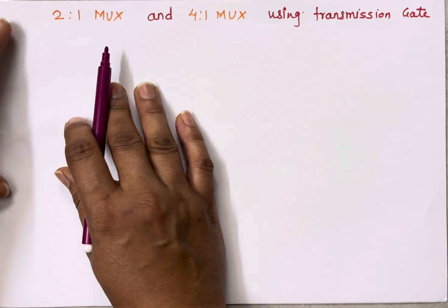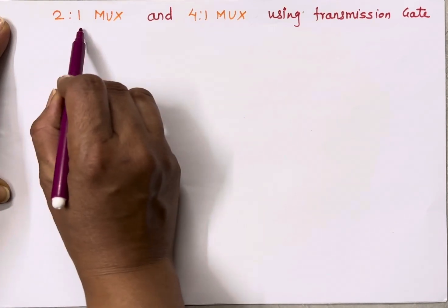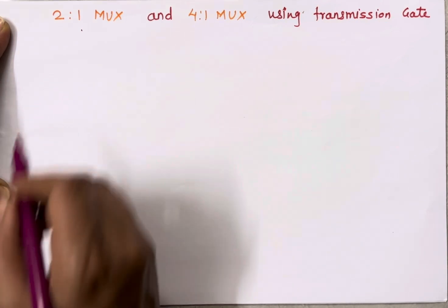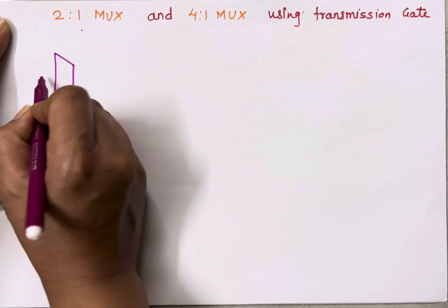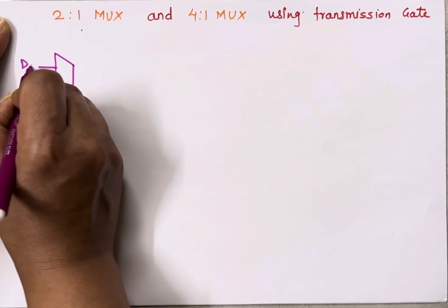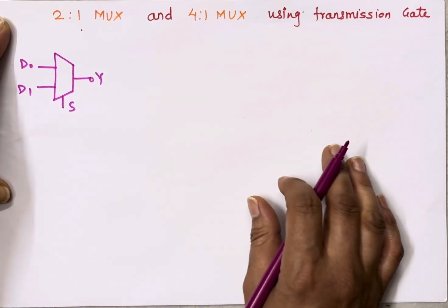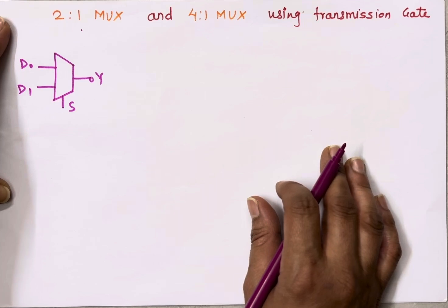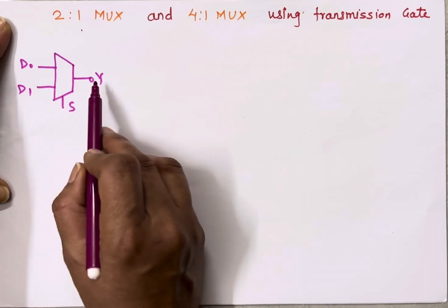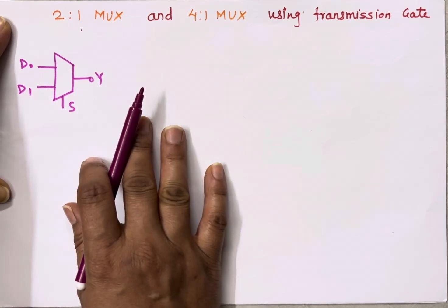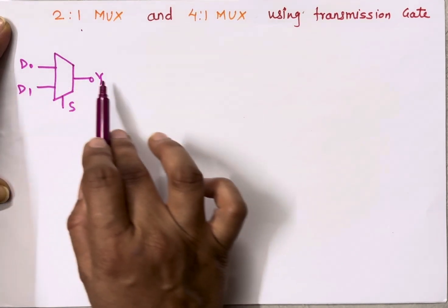Let's start with the 2-to-1 multiplexer. A 2-to-1 multiplexer has 2 inputs and 1 output. The symbol has 2 inputs D0 and D1, output Y, and 1 select input. The job of the select input is to choose a particular input out of D0 and D1 and pass that value to the output side. So a multiplexer is basically a data selector — it selects input data and passes that data to the output side.